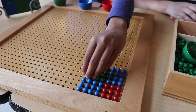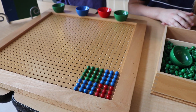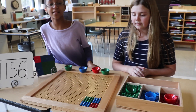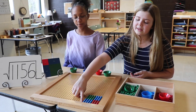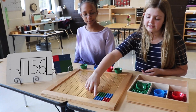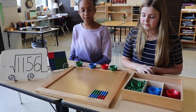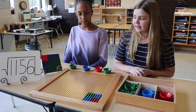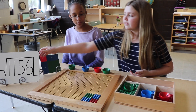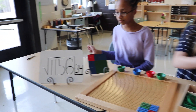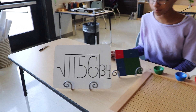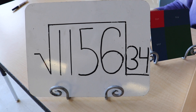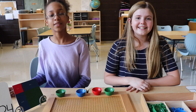Now our square is complete, and to find the answer, we will look at the right side of the binomial. We can see we have three 10 pegs, which means we have 30, and four unit pegs, which means we have 4. So our answer is 34. The end.